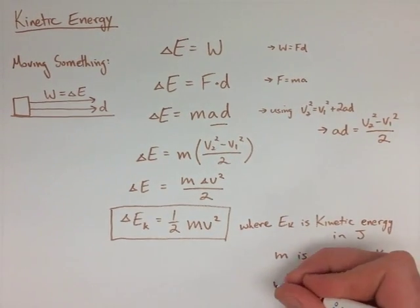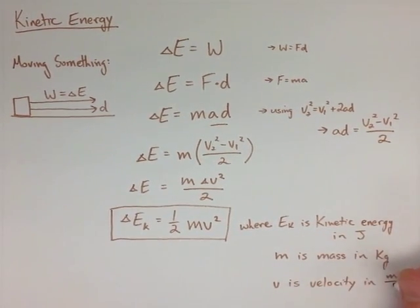That means our energy is in joules, it's kinetic energy, mass is in kilograms, and velocity is in meters per second.